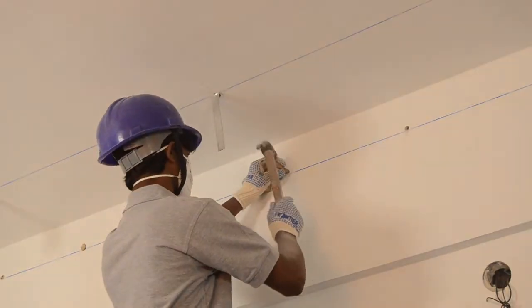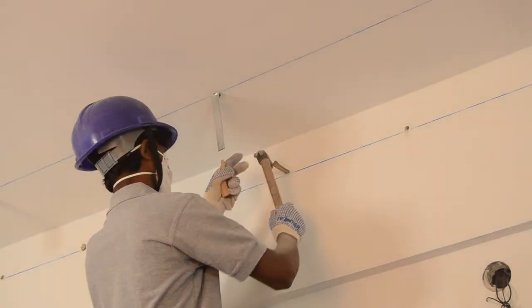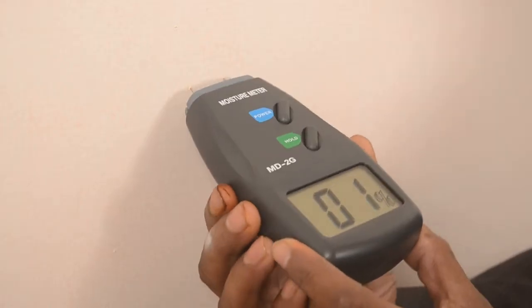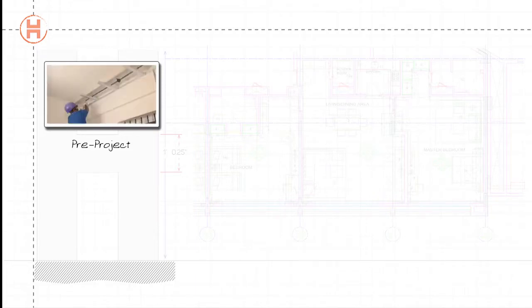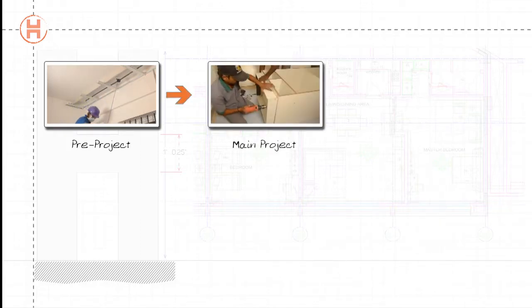Certain works in the project are executed at certain stages. In the pre-project stage, false ceiling work must be done — this is before modular furniture installation starts. Point identification for mood lighting must also be carried out during this phase.